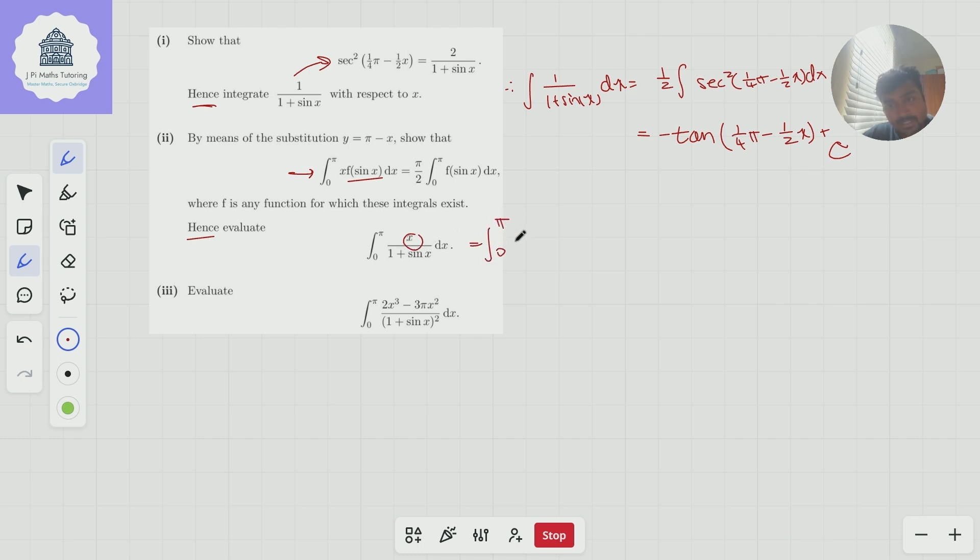And so here, I've got x multiplied by a function of sine x. So just to make that explicitly clear, this is x multiplied by one over one plus sine x dx. So according to this rule, we've just proved this is equal to pi over two times the integral from 0 to π of one over one plus sine x dx. And lo and behold, we can use our part one to help us because we integrated one over one plus sine x.